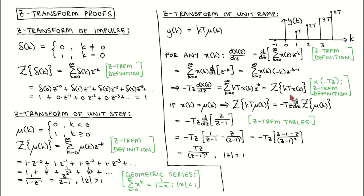We now apply this intermediate result to the unit ramp. If we choose the signal x to be the unit step, then kT times mu of k is a unit ramp, and we can write its Z-Transform as minus TZ times the derivative of the Z-Transform of the unit step. We use the Z-Transform tables to read off the Z-Transform of the unit step, calculate the derivative, gather the terms, and after some manipulation, we arrive at the Z-Transform of the unit ramp. Since we use the Z-Transform of the unit step in the derivation, the region of convergence for this result is the same as that of the unit step.